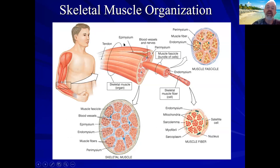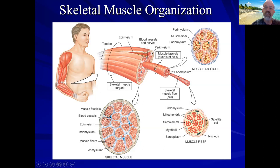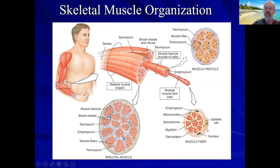Within each level of organization there's a wrapping of connective tissue. The whole muscle is wrapped in a layer called the epimycium. Within that, the individual fascicles are each wrapped in a layer called the paramycium. Within each fascicle, individual muscle fibers or muscle cells are wrapped in a layer of connective tissue called the endomycium. So: epi, peri, endo. Within each muscle fiber we then have the myofibrils.